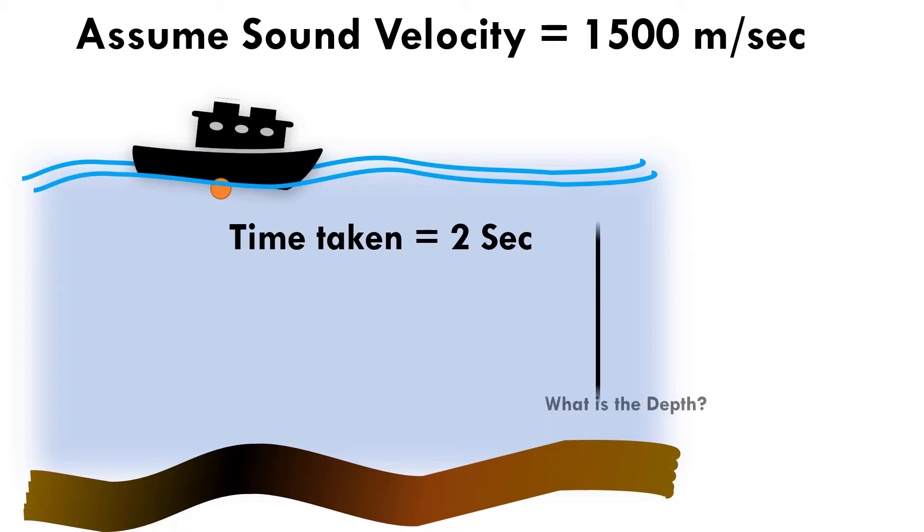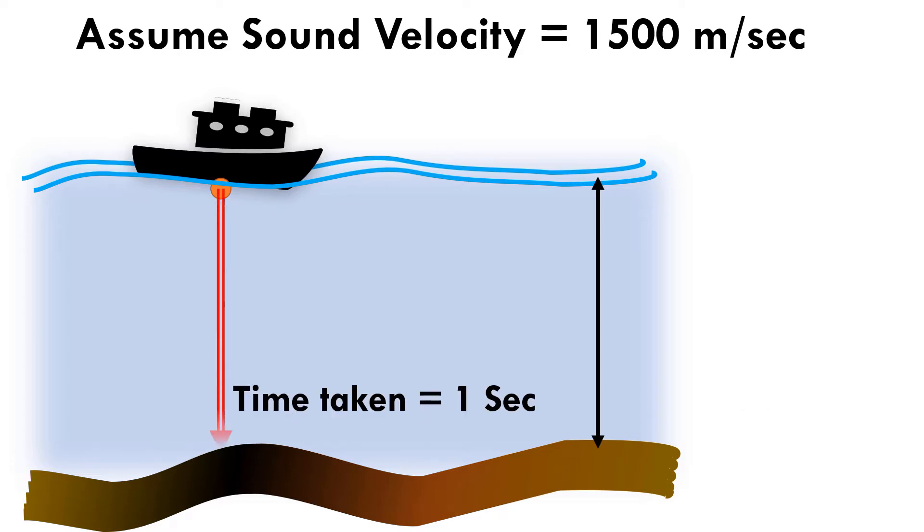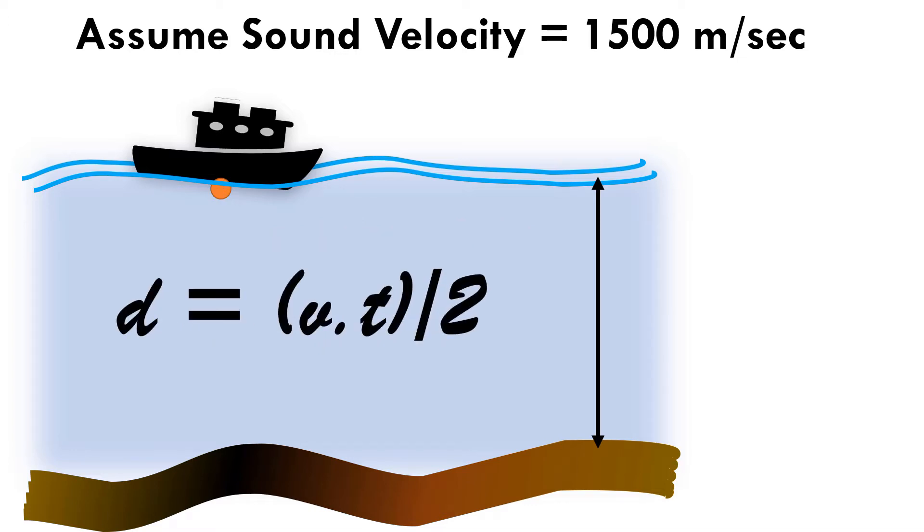Sound traveled downward, bounced back from the seabed and reached the transducer in 2 seconds. As this is a two-way travel from a transducer to seabed and back, the sound actually took 1 second to reach the bottom. In 1 second, the sound travels 1500 meter. The depth is 1500 meter. Mathematically, we can write the equation as d is equal to vt divided by 2, where d is the depth, v is the velocity of sound and t is the travel time.